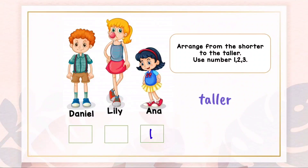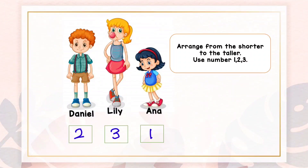Daniel! He is taller than Anna, so we write him as number two. How about Lily? Yes, Lily is taller than Daniel, so we write Lily as number three. Now we have the answer. The arrangement from shorter to taller is: first, Anna; second, Daniel; third, Lily. Easy, right?